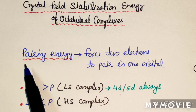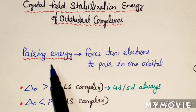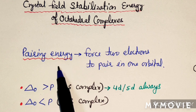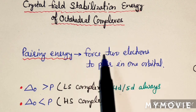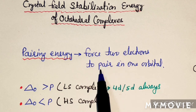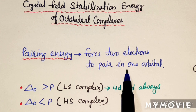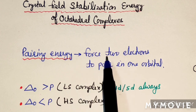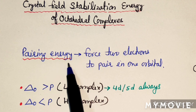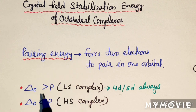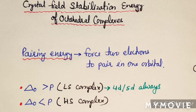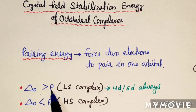To calculate CFSE, we need to know one important term: pairing energy. Pairing energy is the energy required to force electrons to pair in one orbital. There is a relationship between CFSE and pairing energy. If CFSE (delta O) is greater than pairing energy P, it is a low spin complex.